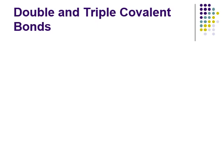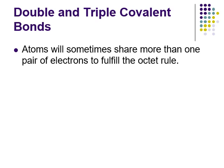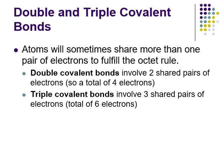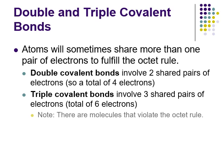Sometimes atoms will share more than one pair of electrons to fulfill the octet rule. A double covalent bond is when atoms share two pairs of electrons - a total of four electrons. A triple covalent bond would be three pairs of electrons. We can represent a single covalent bond with a single line, a double covalent bond with two lines, and a triple covalent bond with three lines.